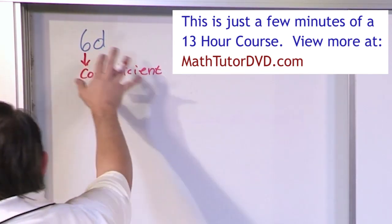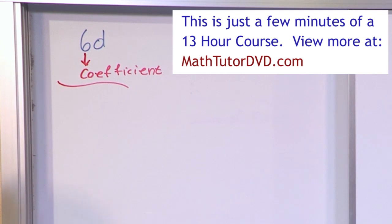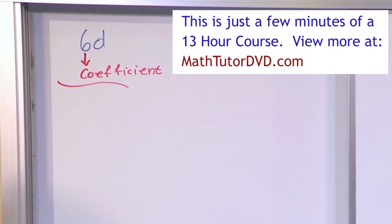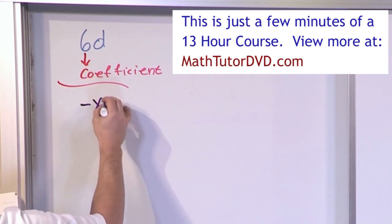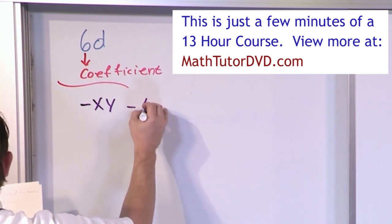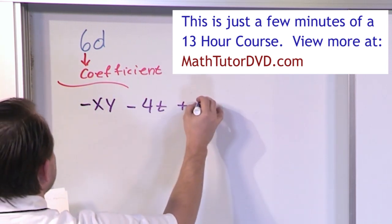So this is very simple because there's only one thing here, but let me go ahead and write a little bit more complicated one down and you'll see how to deal with it. What if you had the expression: negative x times y minus 4 times t plus 35.